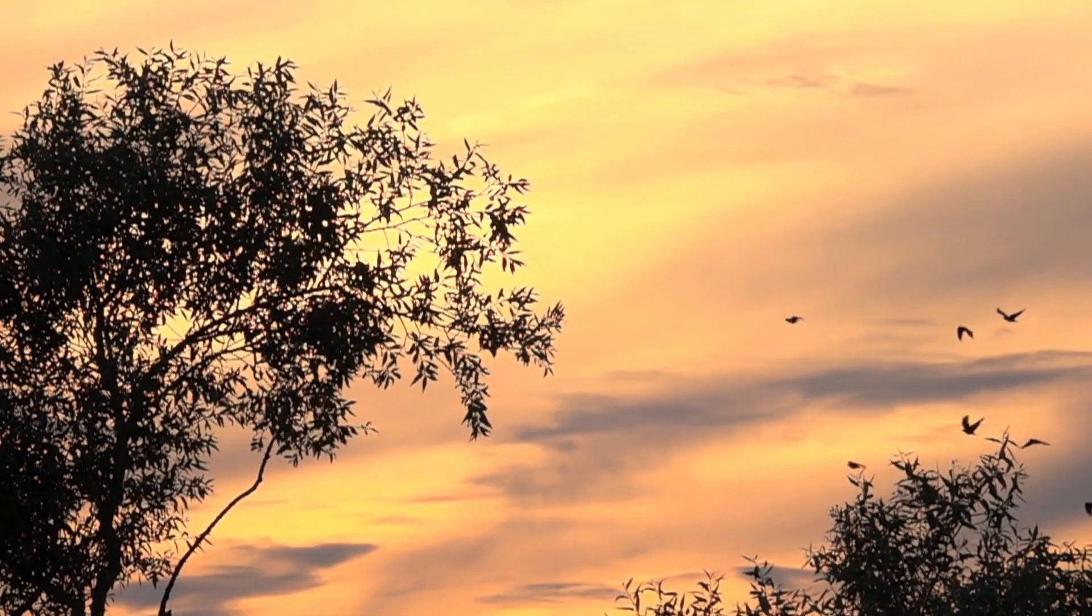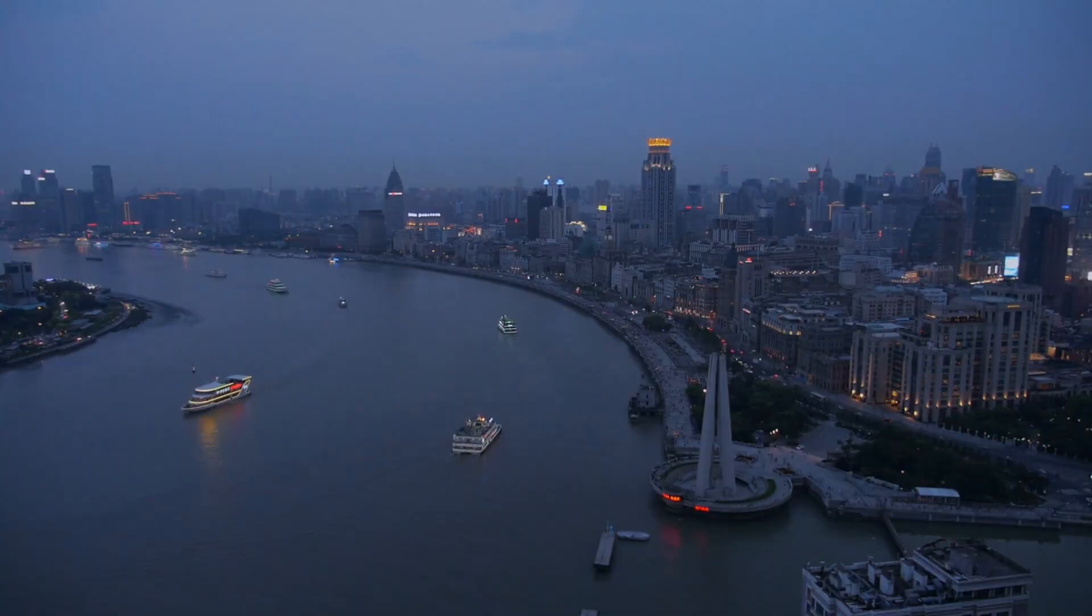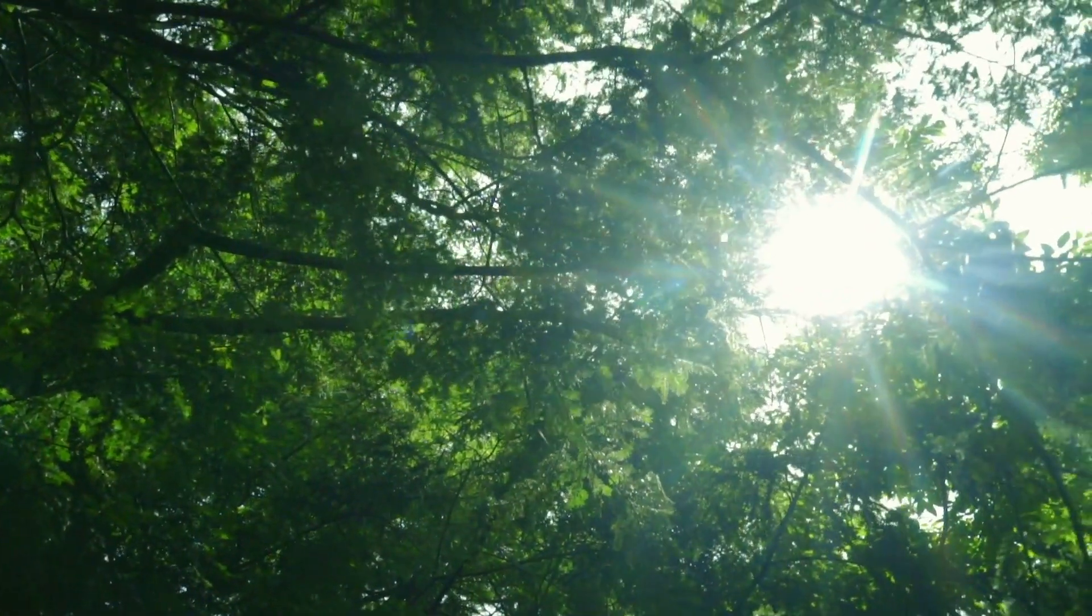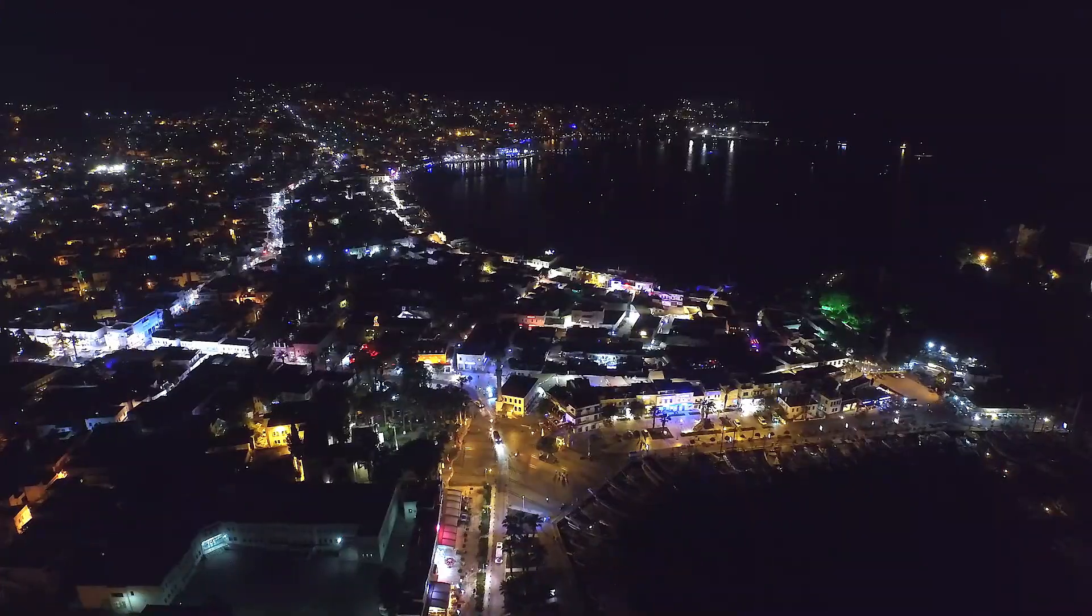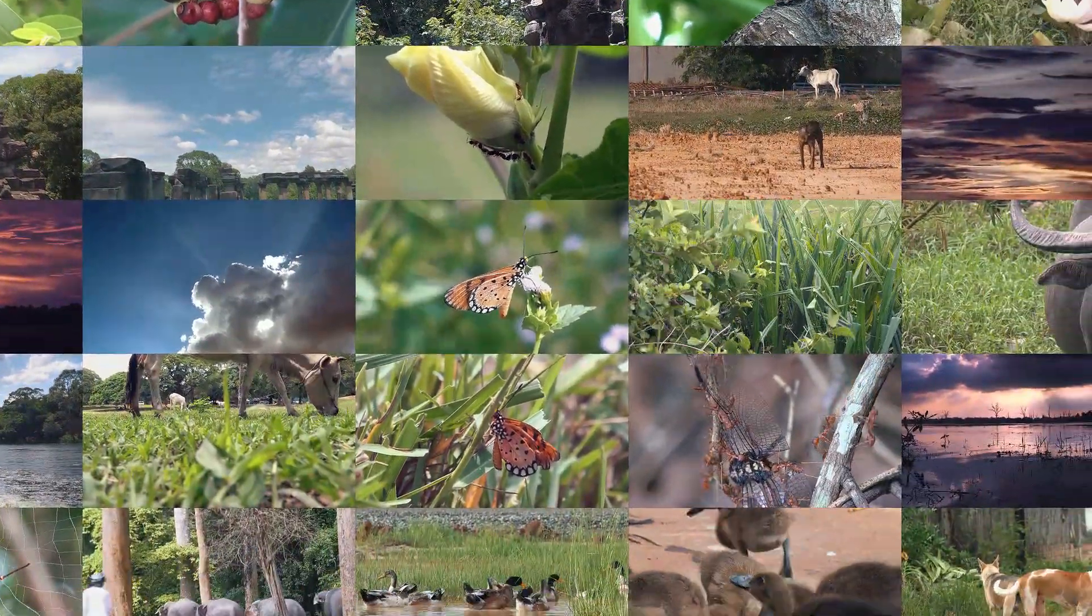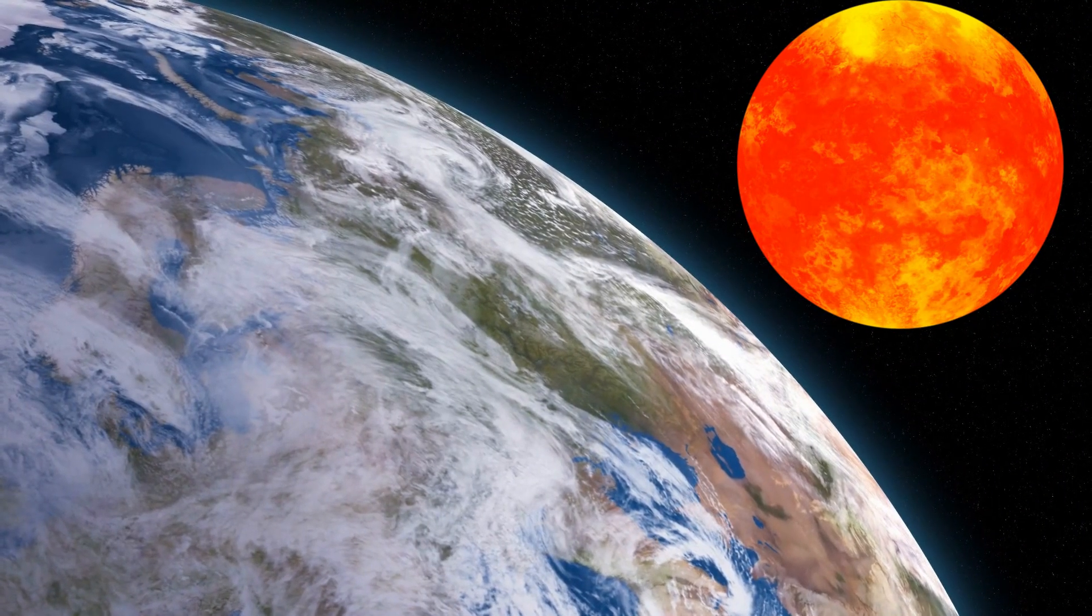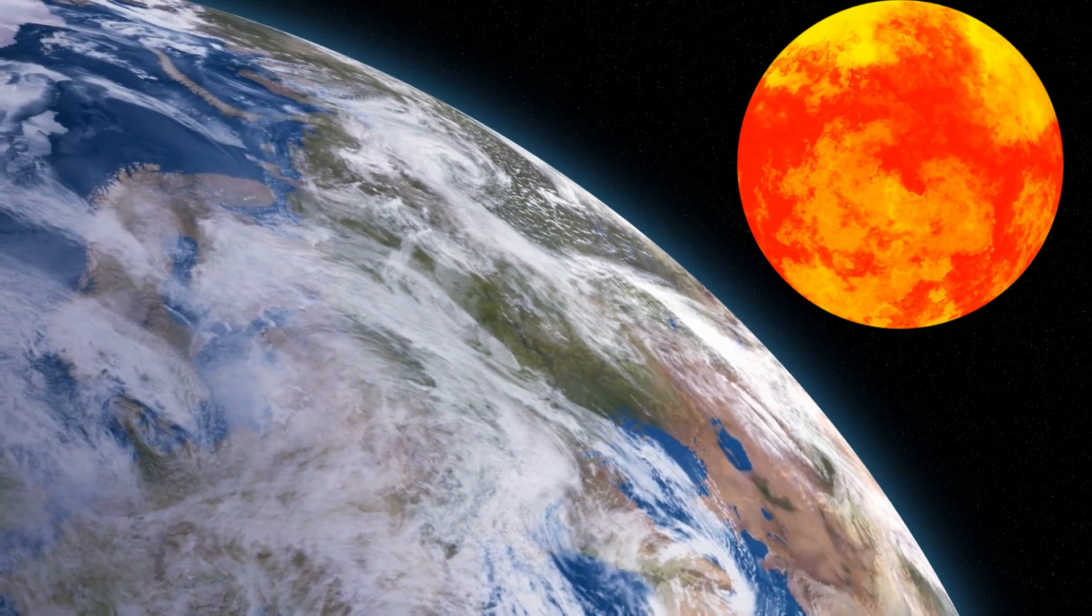Days and nights might change too. Imagine shorter days and longer nights, or vice versa. As for life on Earth, well, it might have to adapt big time. Plants might struggle with less sunlight and animals might have to adjust to different climates. It's like a whole new world with new rules. This tiny sun could really shake things up in our solar system.